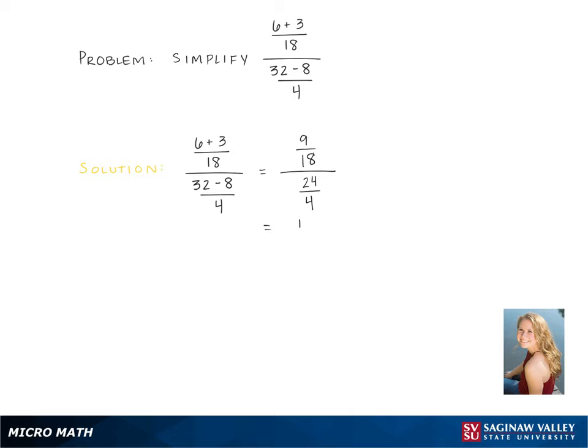9 is a common factor in both 9 and 18, so this becomes 1 half. The bottom is 24 divided by 4, which is 6.